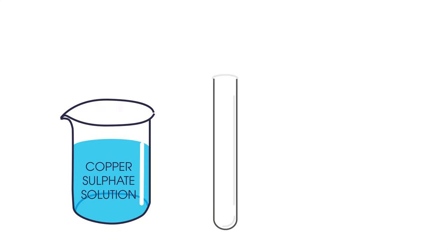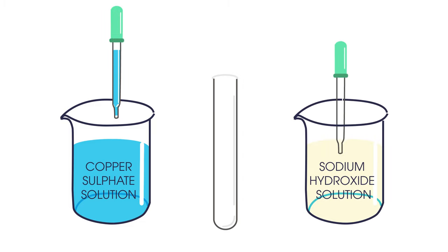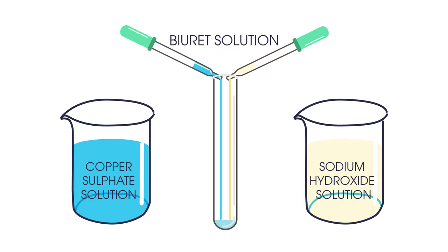To test food for protein, you need to use copper sulfate solution and sodium hydroxide solution. These two liquids together may be called biuret solution, which is a pale blue liquid.